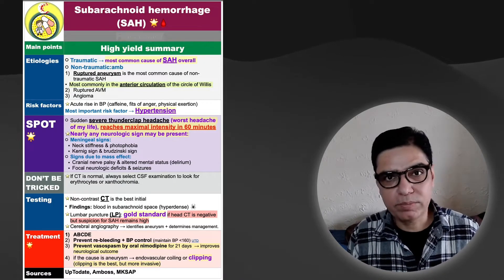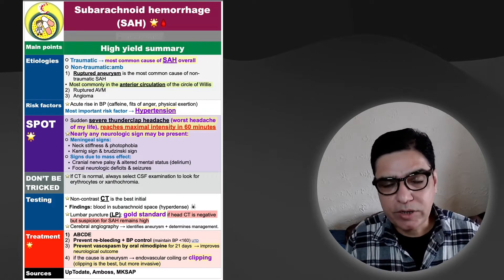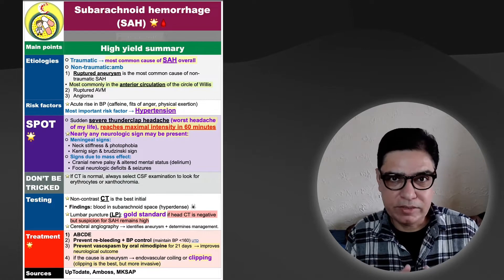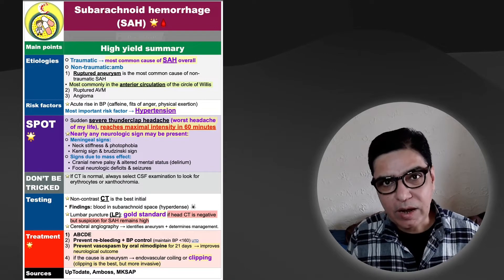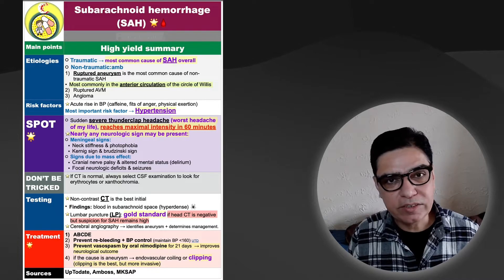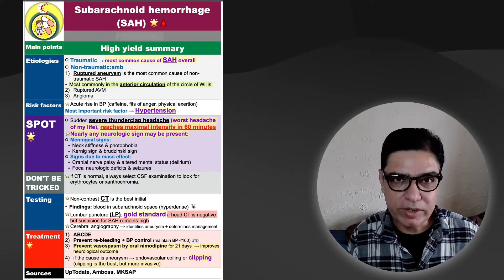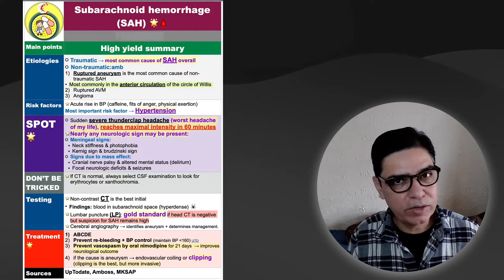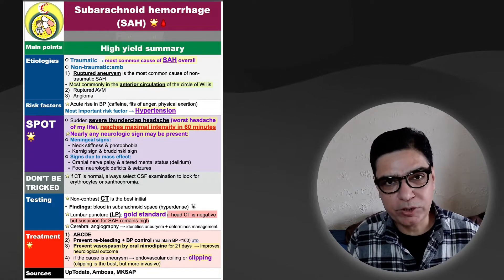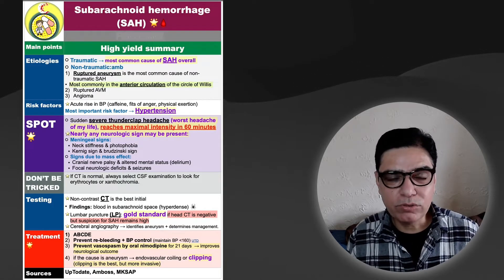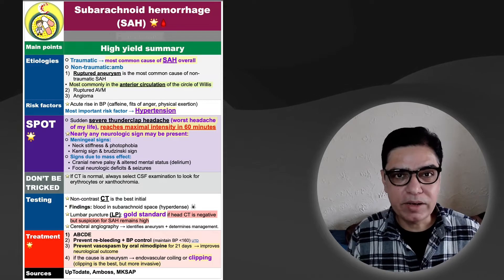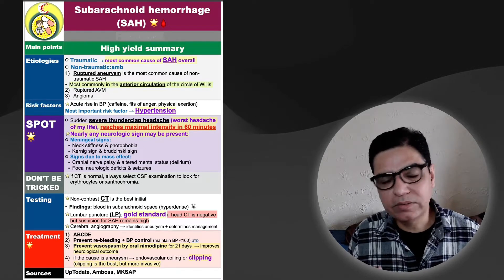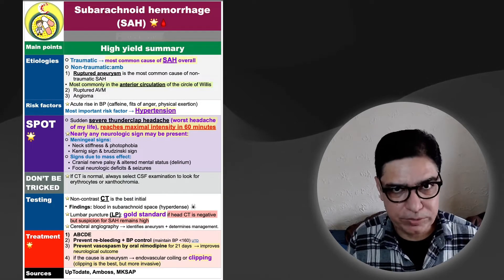If there is bleeding into this space, caused by rupturing of the bridging veins in the subarachnoid space, there would be accumulation of clot in this space — which we call a subarachnoid hemorrhage. This is considered dangerous because the clot accumulating in this space causes pressure on the surface of the brain. The brain is quite soft, so surrounding neurons get compressed, edema can develop, and these neurons can die, leading to serious consequences for the patient.